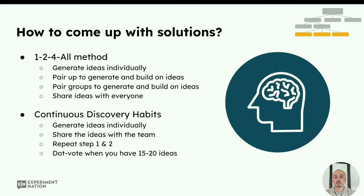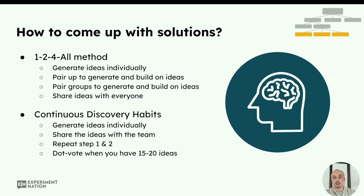Another brainstorming method from the book Continuous Discovery Habits: generate ideas individually, share ideas with the team, repeat steps one and two, and then dot vote when you have 15 to 20 ideas. We choose these methods because you start by generating ideas individually, which gives everyone room and space to come up with ideas. Inviting people from different teams gives different points of view. It also helps that if one person has a lot of ideas, they stay quiet initially, giving others room to think and pitch their ideas.